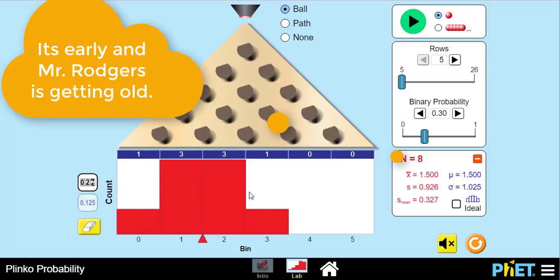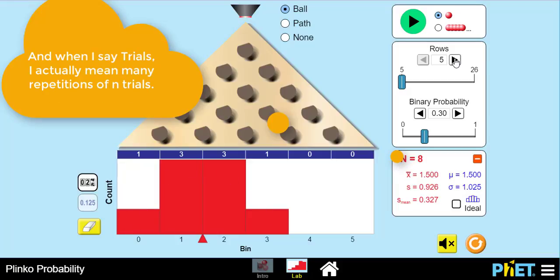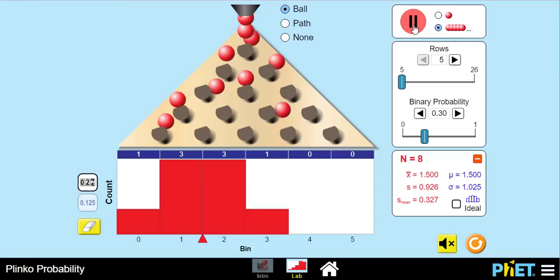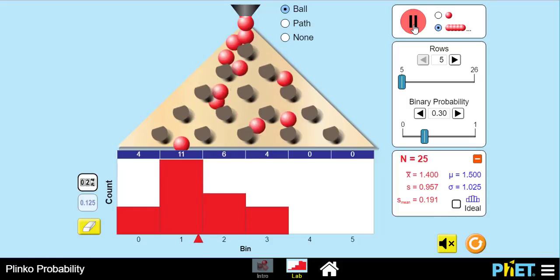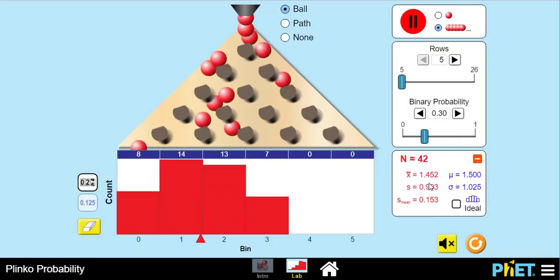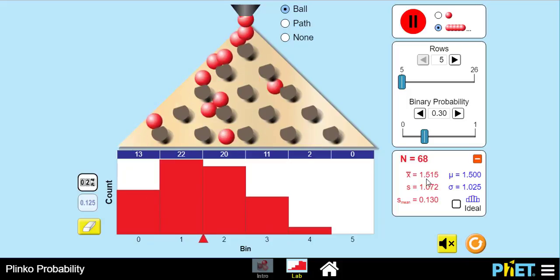Here is what the frequency histogram looks like for 8 balls and 5 rows. You don't have to keep clicking the thing here; you can just let lots and lots of balls go at a time, and this is going to keep track of our x bar.